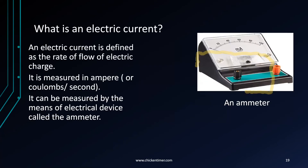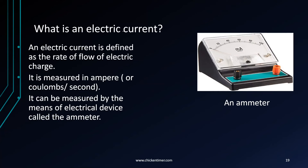If you want to measure current, you use the ammeter. To define electric current, consider a circuit with a light bulb and an ammeter. In the circuit there are many charges — electrons. We just call them charges, moving in packets like that.